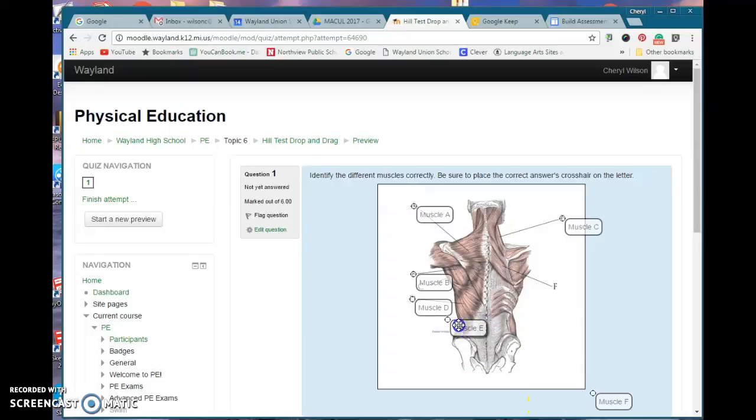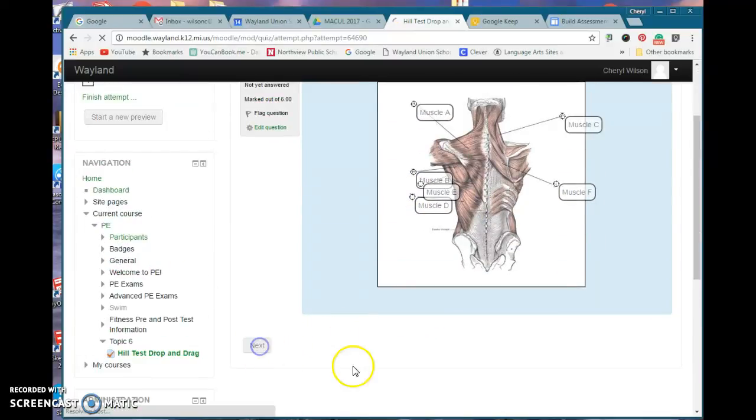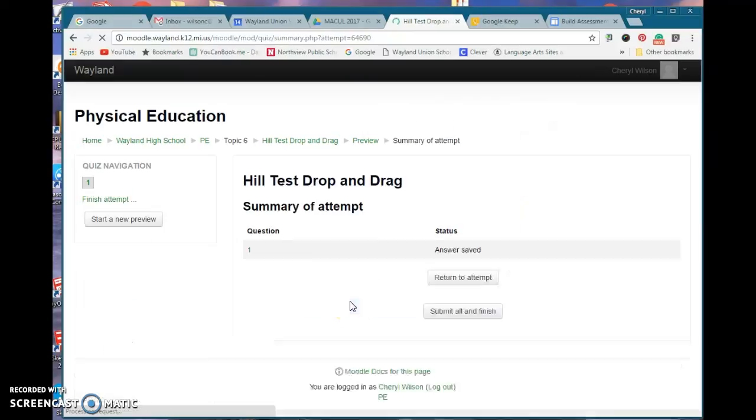Muscle E would be here and then Muscle F, and then I would score it and I should get four out of six.